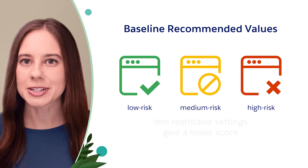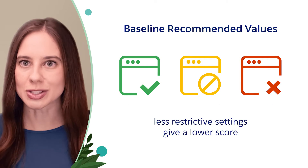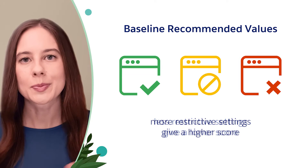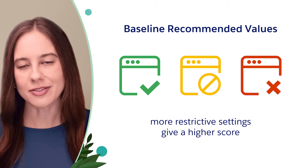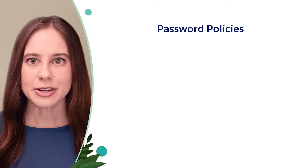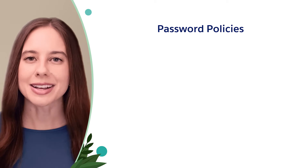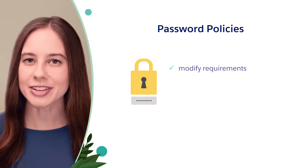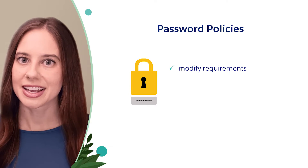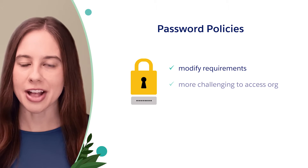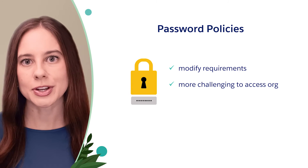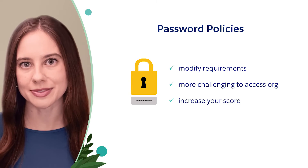Generally, if your settings are less restrictive, you'll have a lower score. More restrictive means a higher score. For example, if you change your password minimum length from five characters to eight, this change makes it more challenging to access the org, so your overall score will increase.